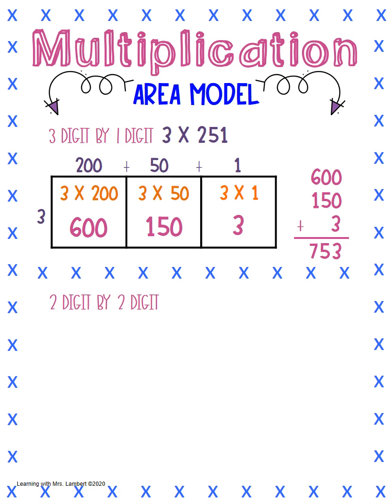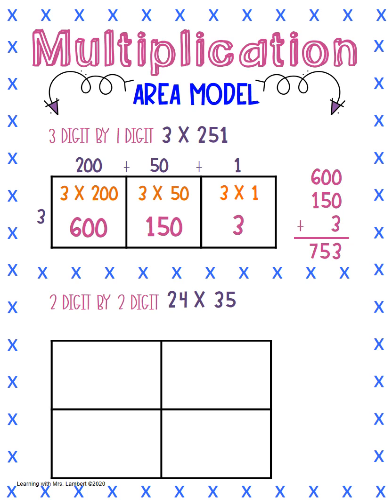For our next problem, we're going to do a two-digit by a two-digit: 24 times 35. The first thing we do, again, is draw our area model. This time, because we have a two-digit by a two-digit, we're going to need two rows and two columns.